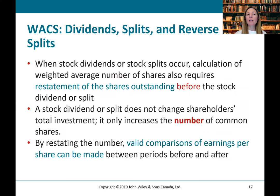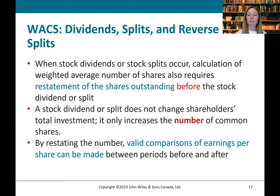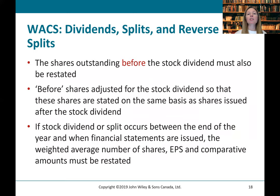When stock dividends or stock splits occur, the calculation of the weighted average number of shares also requires restatement of the shares outstanding before the stock split. A stock dividend or split does not change shareholders' total investment — it only increases the number of common shares. By restating earnings per share, valid comparisons can be made between periods. The shares outstanding before the stock dividend must also be restated so they are on the same basis as shares issued after the stock dividend.